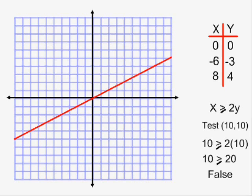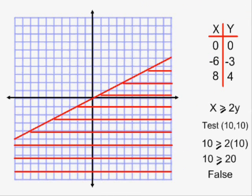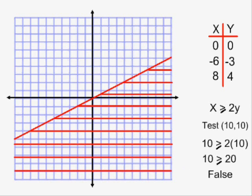In this case, I am shading from my line away from my test point, and that means shading this region here. This is how we shade an inequality.